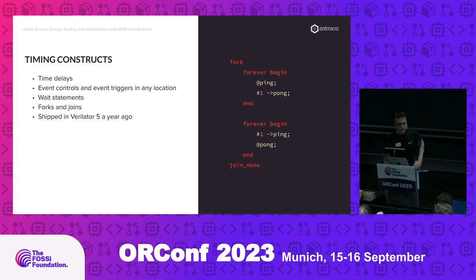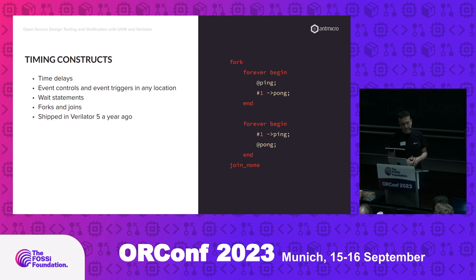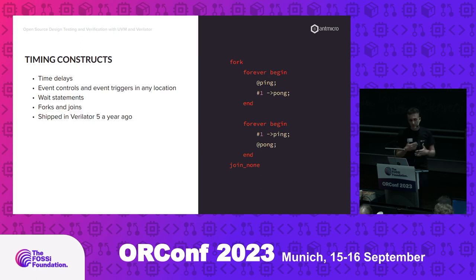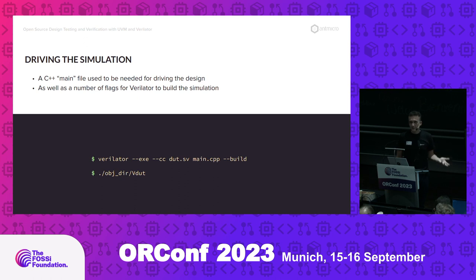One of the first contributions towards that from us, and one of the biggest, was what we call timing constructs or timing support. This covers things like time delays, event controls, wait statements, and forks and joins. This basically allowed us to convert Verilator from a strictly cycle-based simulator into somewhat of a hybrid, because it now also supports event-based simulation. If you haven't heard about that, you might be interested in checking it out — maybe these features are something that you were needing.